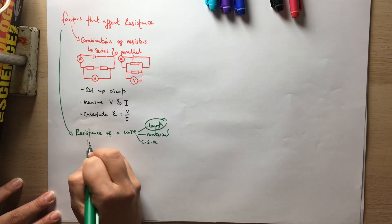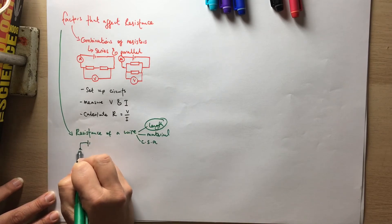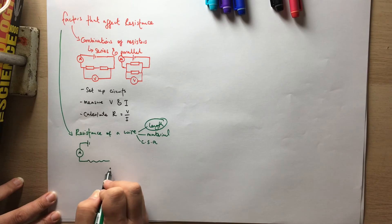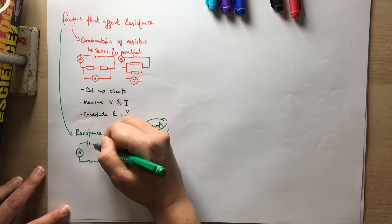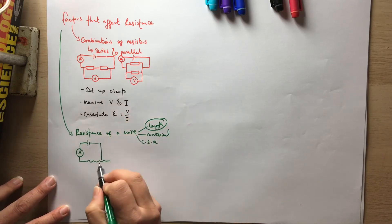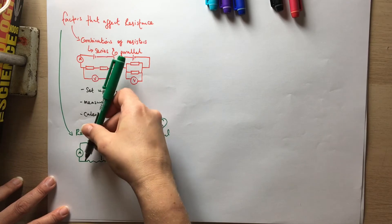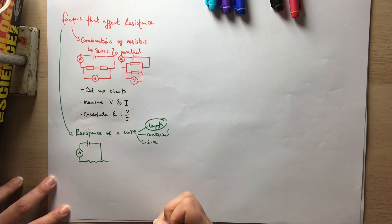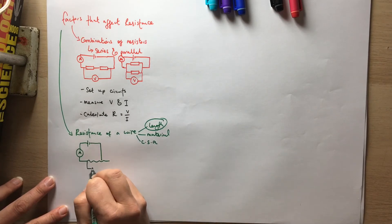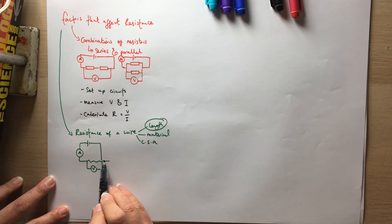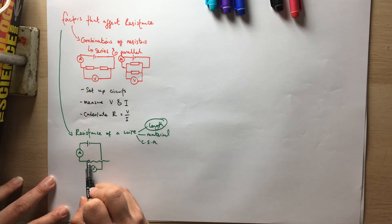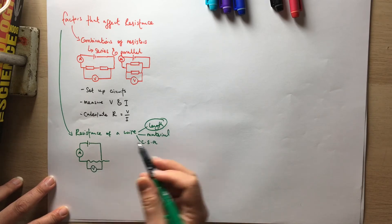For this practical you have a power supply connected to an ammeter connected to a wire. The wire should be as straight as possible so the length measurement is accurate. You have a lead attached to a point along the wire that you move to change the length being measured. A voltmeter is placed across the length of wire being measured, with one end permanently connected and the other end being the adjustable point.